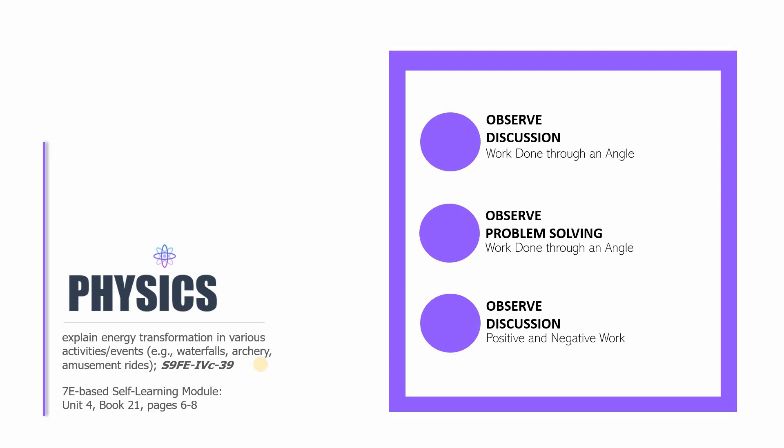In this video lesson, our focus, our foci are the following under Observe: a discussion about work done through an angle. And then we're gonna have a sample problem. We are going to work on a problem together and figure out how to solve it if it's work done through an angle. And then the last one is we will be discussing what it means to have positive or negative work. So these are the parts of this session. Let's now dive in.